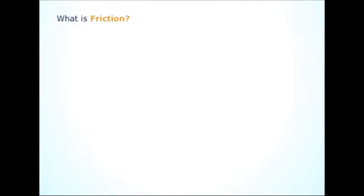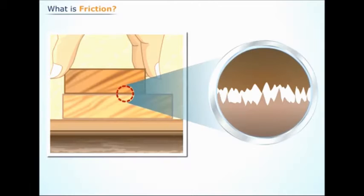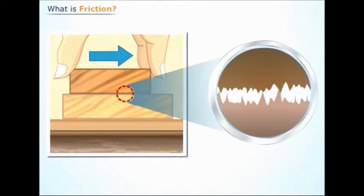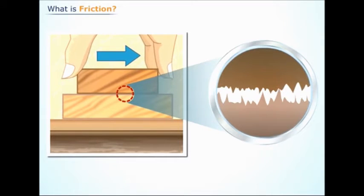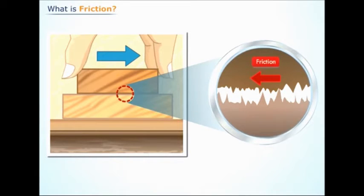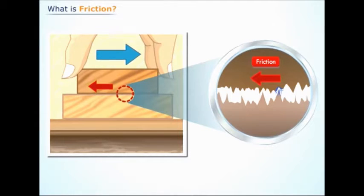What is friction? When two bodies are kept in contact, electromagnetic forces act between the charged particles at the surfaces of the bodies. Thus, each body exerts a contact force on the other. The magnitudes of the contact forces acting on the two bodies are equal, but their directions are opposite, and therefore the contact forces obey Newton's third law.